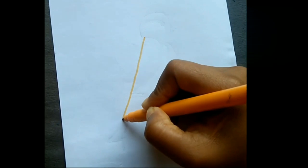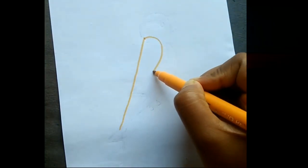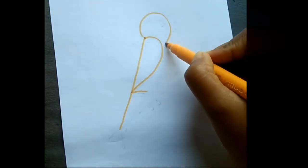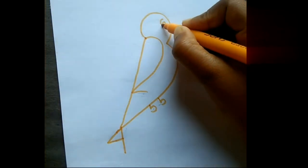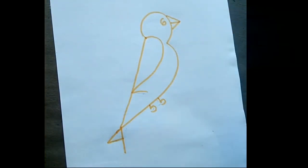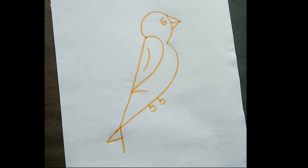Draw a bird using the numbers 1 to 7. 1, 2, 3, 4, 5, 6, 7. Very simple. You too give it a try.